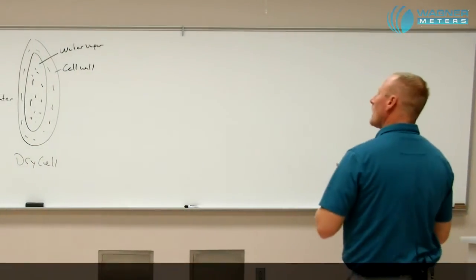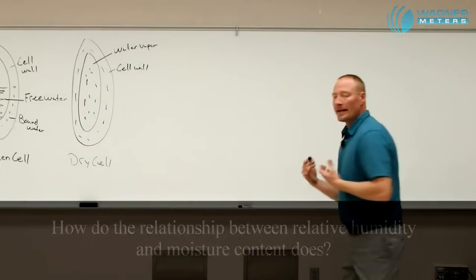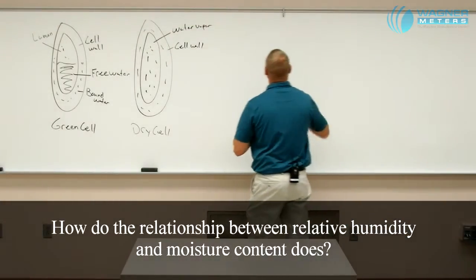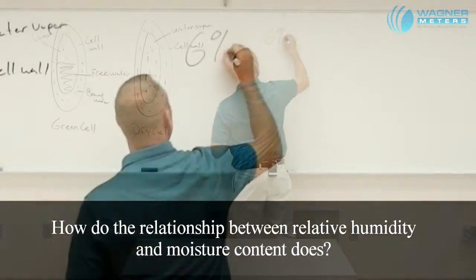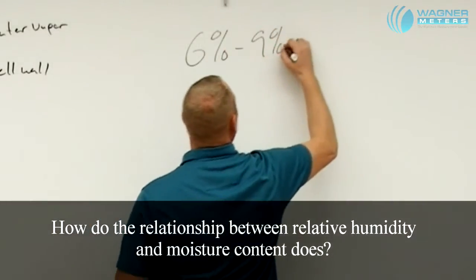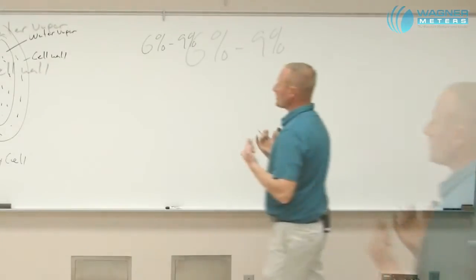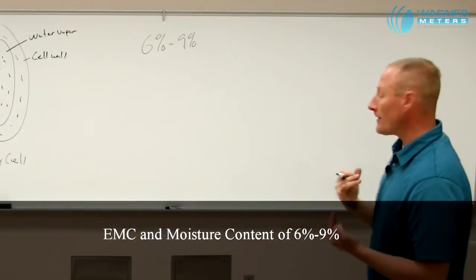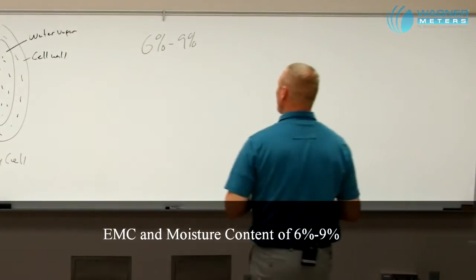Let's take a look at how the relationship between relative humidity and moisture content works. One thing we need to understand is that our moisture content that we strive for in most products, whether it be furniture or wood flooring, is six to nine percent.